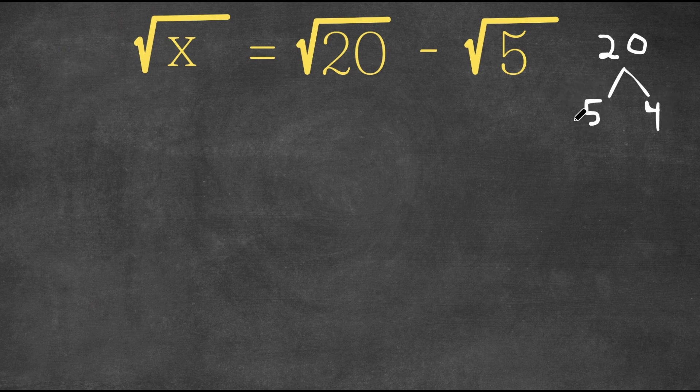And 5 is already prime, so we could leave that, but 4, how do we simplify 4? What are some factors of 4? The only factors of 4 are 2 and 2.